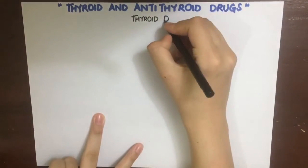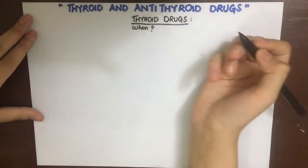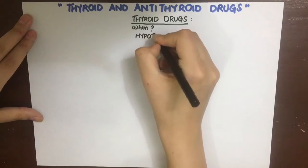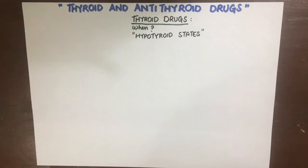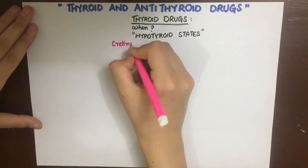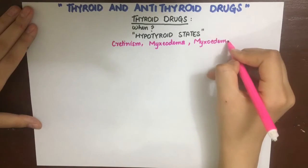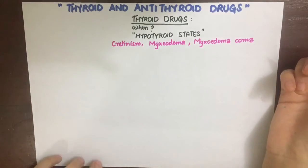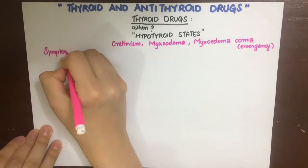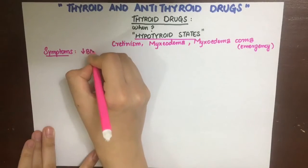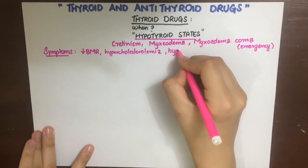We know that the thyroid hormone is responsible for increasing the metabolism by increasing oxygen consumption in every cell of the body. Now you can imagine when we would want to use drugs that mimic the thyroid hormone — of course in hypothyroid states. The hypothyroid states can be different. Those in the children or infants are called cretinism. Myxedema is a manifestation of hypothyroidism due to the deposition of mucopolysaccharides in the skin causing edema, while myxedema coma is an emergency hypothyroid state. The symptoms of hypothyroidism are a very long list because thyroid hormone acts on every single cell in the body and enhances its metabolism.